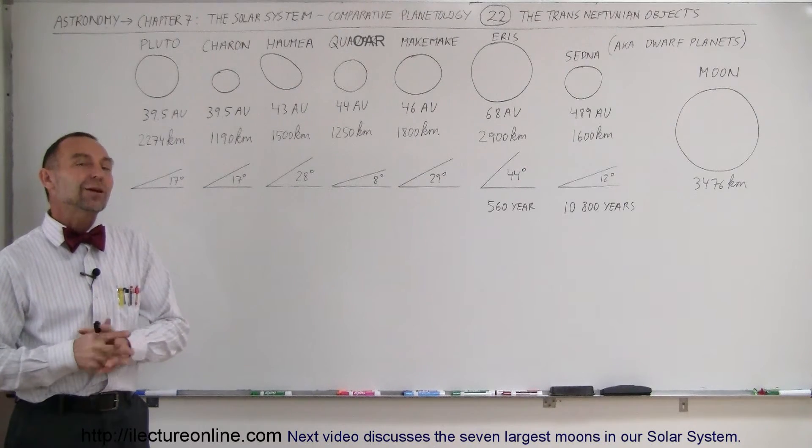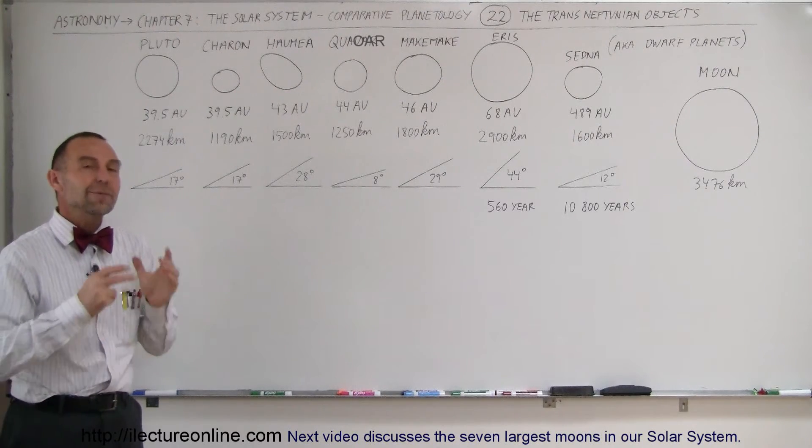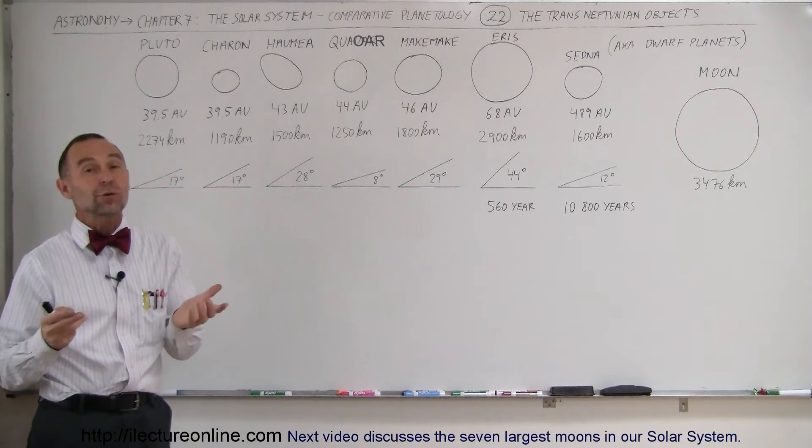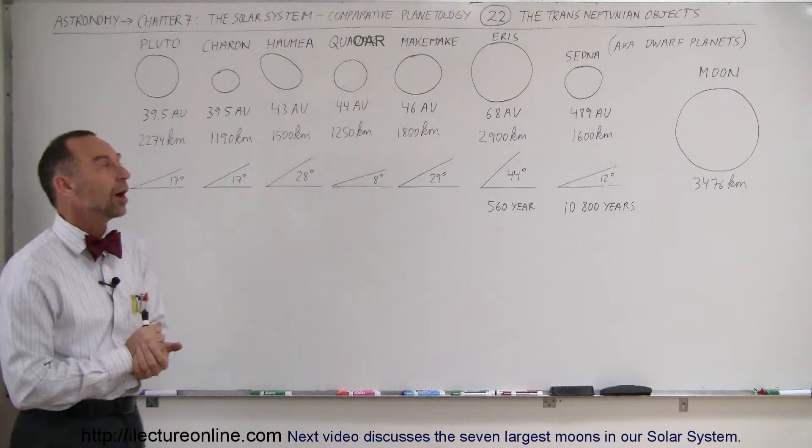Welcome to Electron Line, and now let's take a look at the objects in our solar system beyond the eight planets: the dwarf planets, also known as the trans-Neptunian objects.